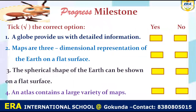Now let's check how much you understand. Do this activity at home in your textbook. First: a globe provides detailed information — this is wrong, only maps provide detailed information. Second: maps are three-dimensional — also wrong, maps are two-dimensional. And an atlas contains a large variety of maps — this is absolutely right.